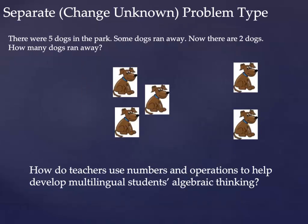Here is a sample problem. Separate, change, unknown is only one problem type for addition and subtraction. This problem shows algebraic thinking because there's some unknown quantity. Use what we call direct modeling strategies with your multilingual learners to solve these types of problems until they're ready for symbols.